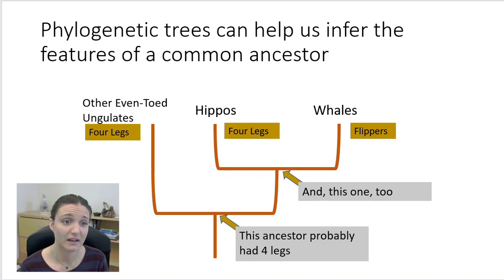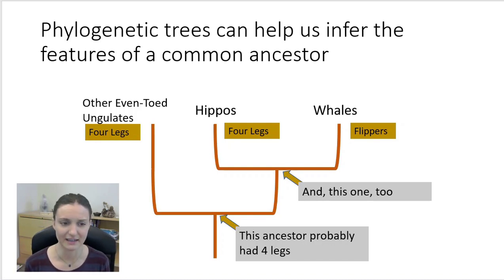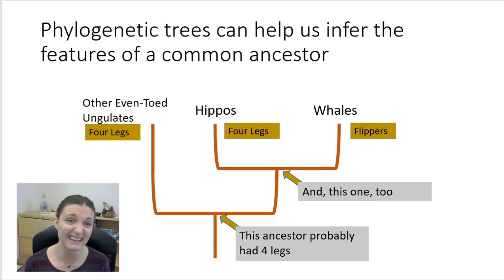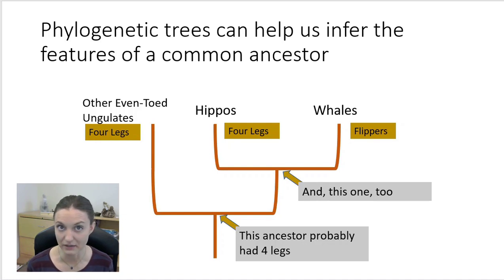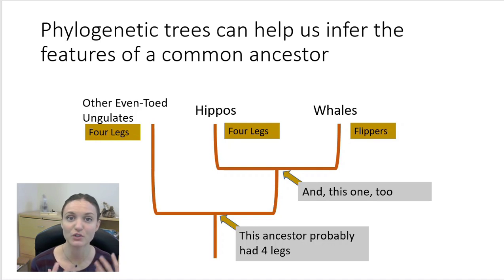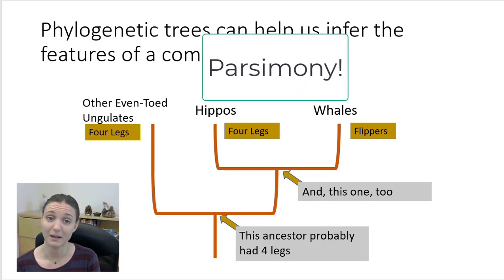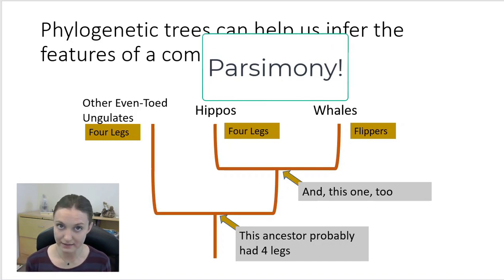Hippos are part of a group called even-toed ungulates — hooved animals that bear their weight on just two of their toes. Deer, giraffes, camels, and elk would be other even-toed ungulates. Looking at this phylogeny, we can infer some characteristics of the ancestor that hippos and whales share. Taking a basic characteristic like having four legs — hippos have four legs, and the other ungulates have four legs too — so we can infer that their common ancestor also had four legs.